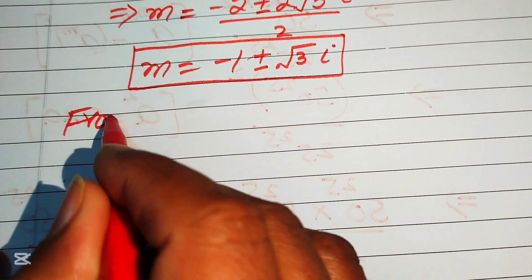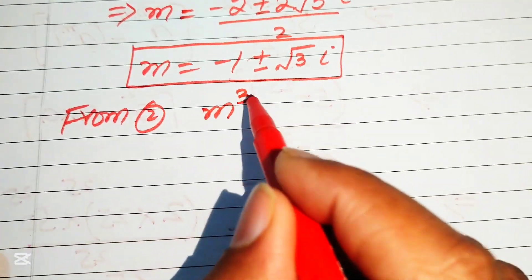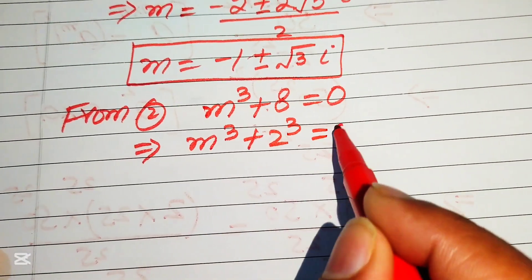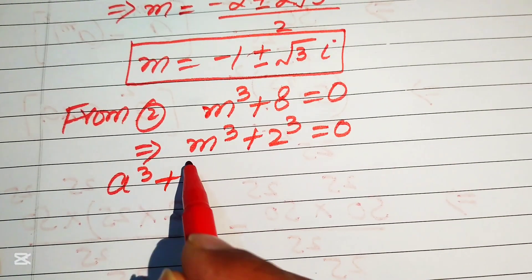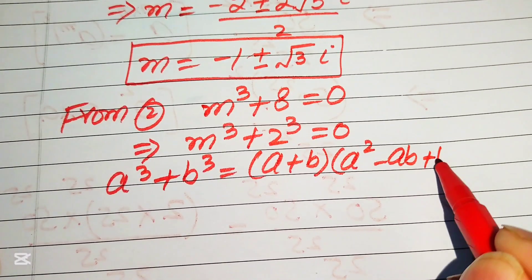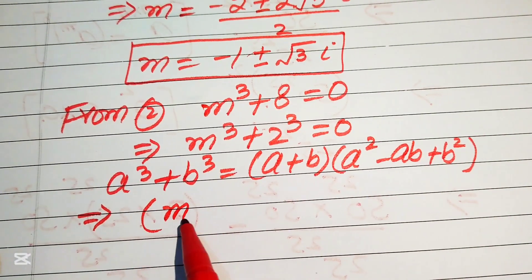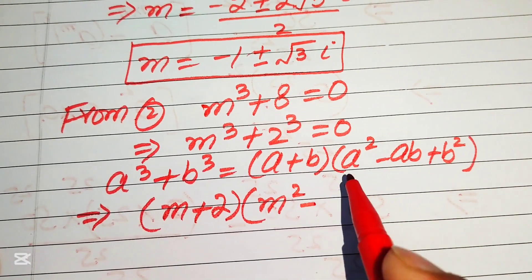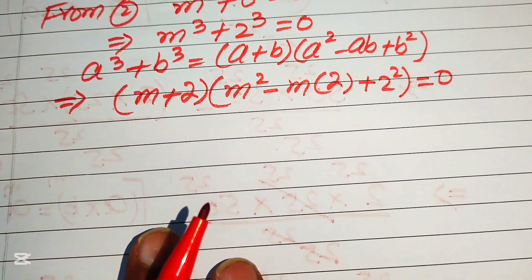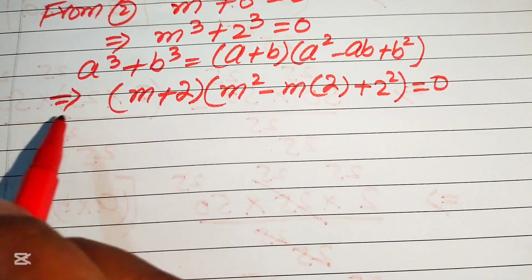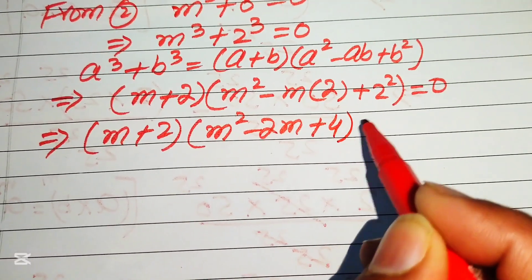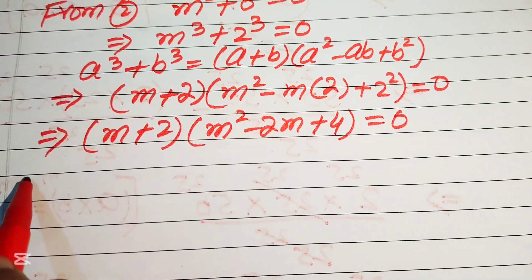Now we move to Equation 2: m³ plus 8 equals 0, rewritten as m³ plus 2³ equals 0. We apply the sum of cubes formula: a³ plus b³ equals (a plus b)(a² minus ab plus b²). This gives (m plus 2)(m² minus 2m plus 4) equals 0.